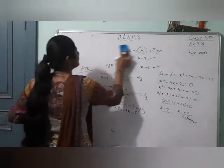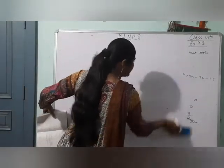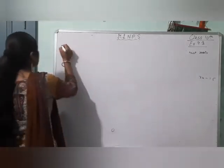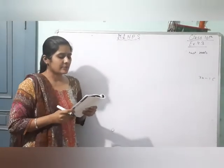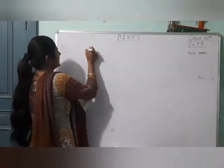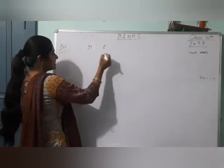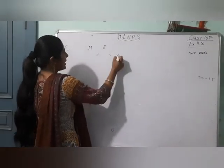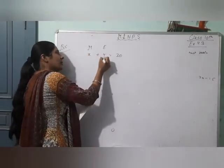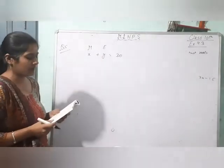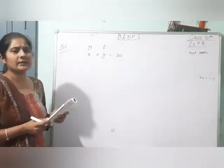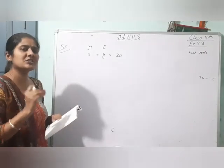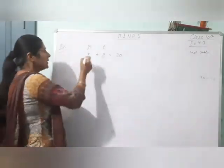Moving on to question number 5. In a class test, the sum of Sheetal's marks in maths and English is 30. Maths aur English doh subjects hain, in dono ke marks milaake 30 aaye hain. Had she got two marks more in maths — maan lo maths mein x aaye hain aur English mein y aaye hain — toh x plus 2 ho jaate uske maths ke number.